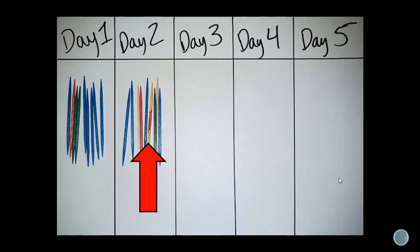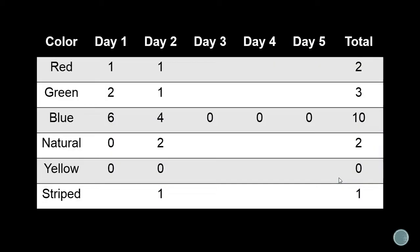On day two, these are the toothpicks we collected, and notice there's a weird one. I told you that yellow ones were poisonous — so is that one yellow or not? That one is not yellow. I added a little spot at the bottom of the data table that says striped. There are yellow ones with red stripes on them, which makes them not exactly yellow. I went ahead and filled out the rest of the data table for blue because we're out — I only had 10 of each color. By day two, the blue ones are extinct.